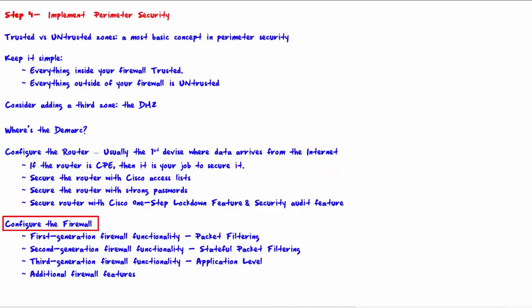Lastly, we configure the firewall. Traffic permitted to pass the router next hits the firewall. A firewall is much more granular and powerful than your router for controlling traffic. First-generation firewall functionality — packet filtering — is similar to Cisco standard and extended access lists. Packet filtering occurs at layers 1, 2, and 3 of the OSI reference model.